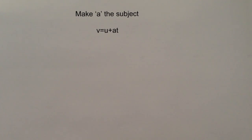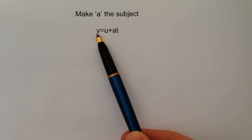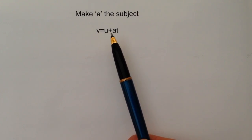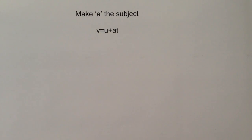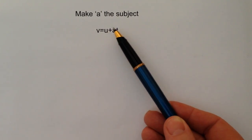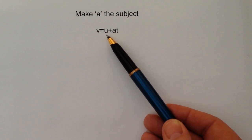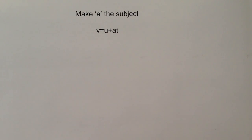Okay, in this video we're just going to make 'a' the subject of this particular formula. Now at the moment v is the subject, so what we're saying is v equals u plus at. And whatever those values are, if you add u to a times t, it means that you'll get the value of v.